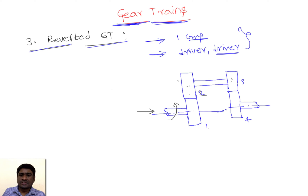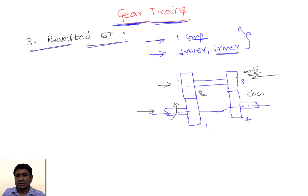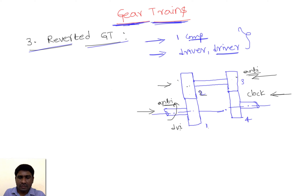Gear 2 is rotating in the clockwise direction because it is engaged with gear 1. If gear 2 is rotating clockwise when viewed from this direction, then gear 3 is also rotating clockwise from this direction. However, if you view from the other direction, gear 3 appears to rotate anti-clockwise, and consequently gear 4 will rotate clockwise when viewed from the right side.